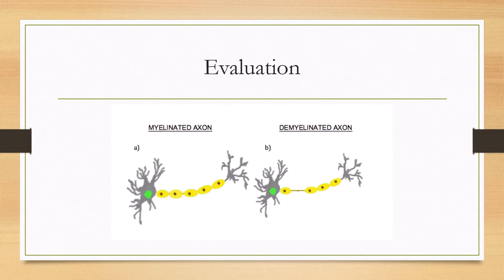This neurogenic pattern is opposed to myogenic patterns, which can be seen in myopathies. Because the muscle itself is damaged, there will be increased recruitment, since more muscles have to contract in order to generate the same force.